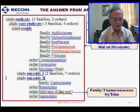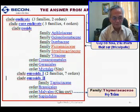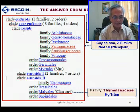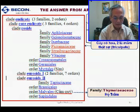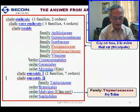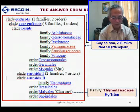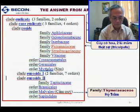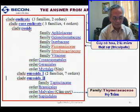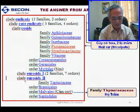Followed by the clade Rosidae. You can see in this plate, in Rosidae, we have six families and three orders. In this Rosidae, there are two sub-clades: Rosidae one and Rosidae two.